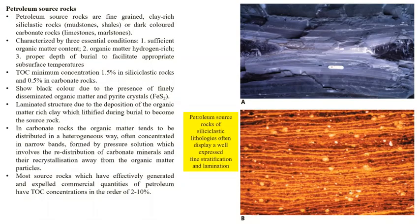Now let us look at the first component: the petroleum source rock. Petroleum source rocks need to be fine-grained clay-rich siliciclastic rocks or dark-colored carbonate rocks. There are normally two types of rocks which form the petroleum source rock: they can be mudstones or shales, or limestones and marls. Limestones are non-clastic rocks and do not have primary porosity; therefore, if they have a sufficient amount of organic matter, they act as very good source rocks. If they are siliciclastic, they need to be clay-rich because clays are non-permeable and block the permeability of the existing rock.